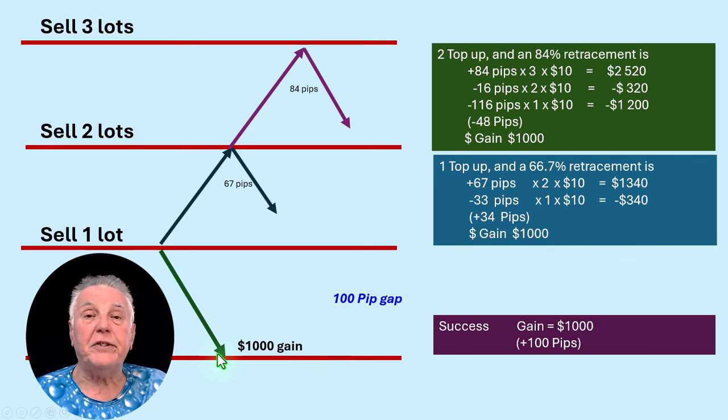So that's the easy part. But what happens if you enter your sell and it goes in the wrong direction? Like here, let's say it went up another 100 pips. What would happen then?